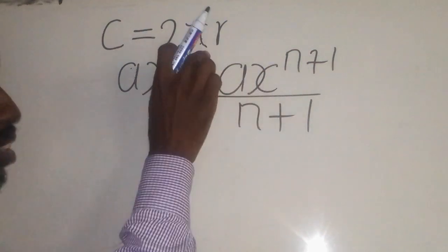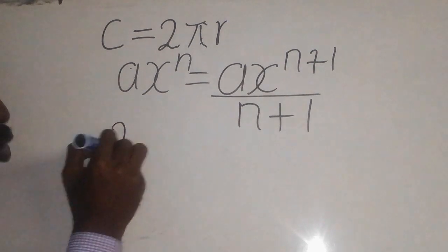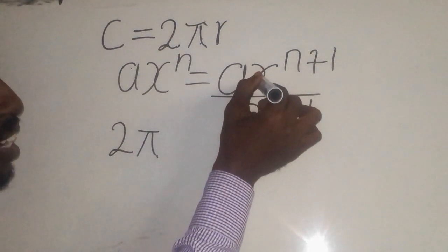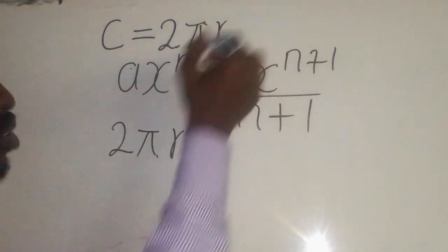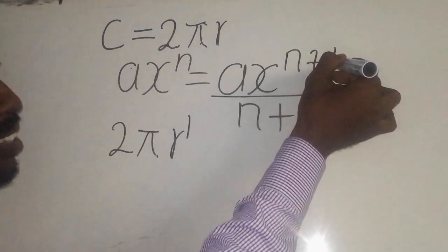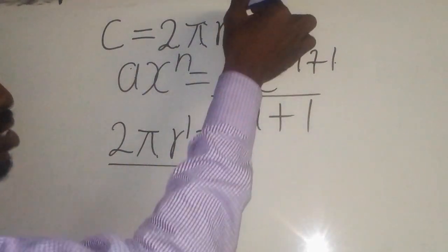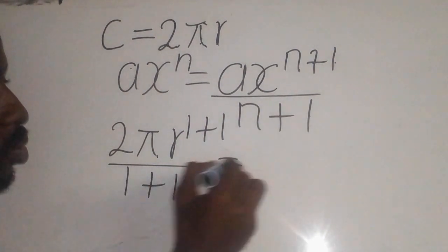We have to apply this formula to this question. Where there is 'a' we put 2π, so it will be 2π. We have x which is r, so you put r. For n which is one here, you put one plus one. This equals 2πr^(1+1)/(1+1).